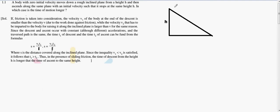Then it ascends along the same plane with an initial velocity such that it stops at the same height h. In which case is the time of motion longer?